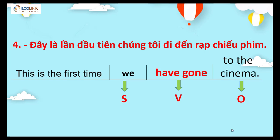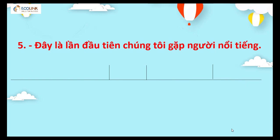Động từ go chuyển sang phân từ 2 là gone. Câu 5: Đây là lần đầu tiên chúng tôi gặp người nổi tiếng.